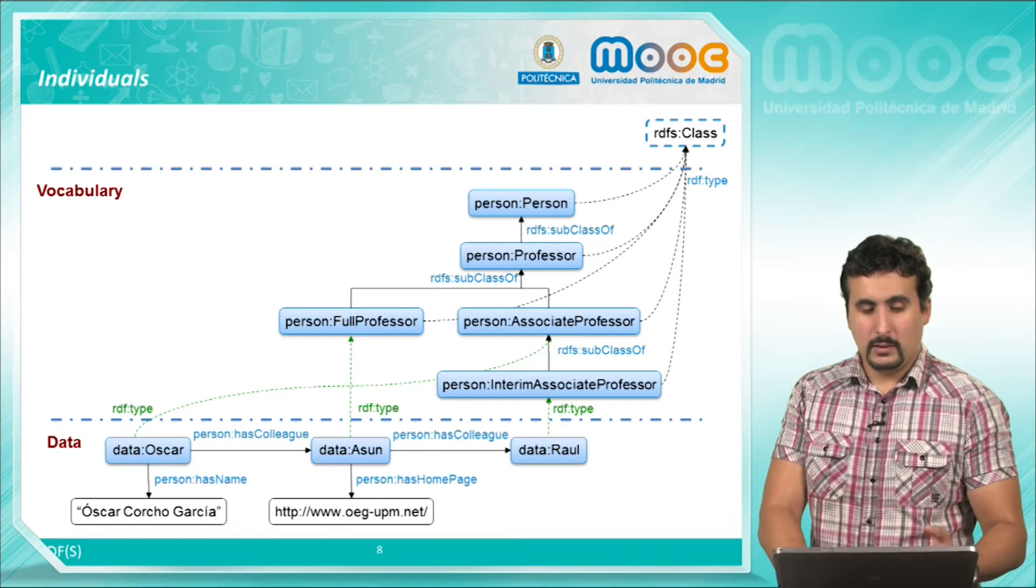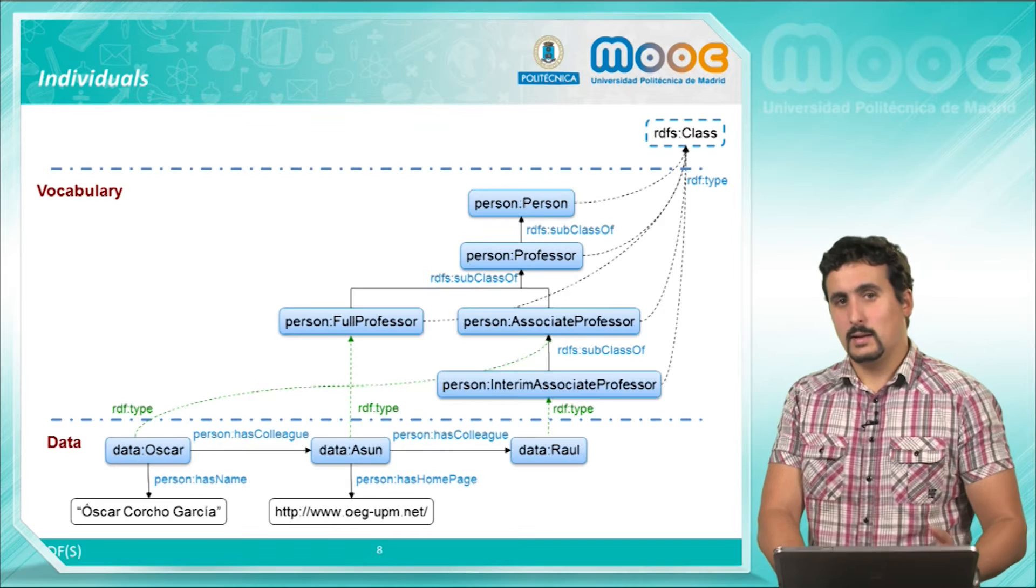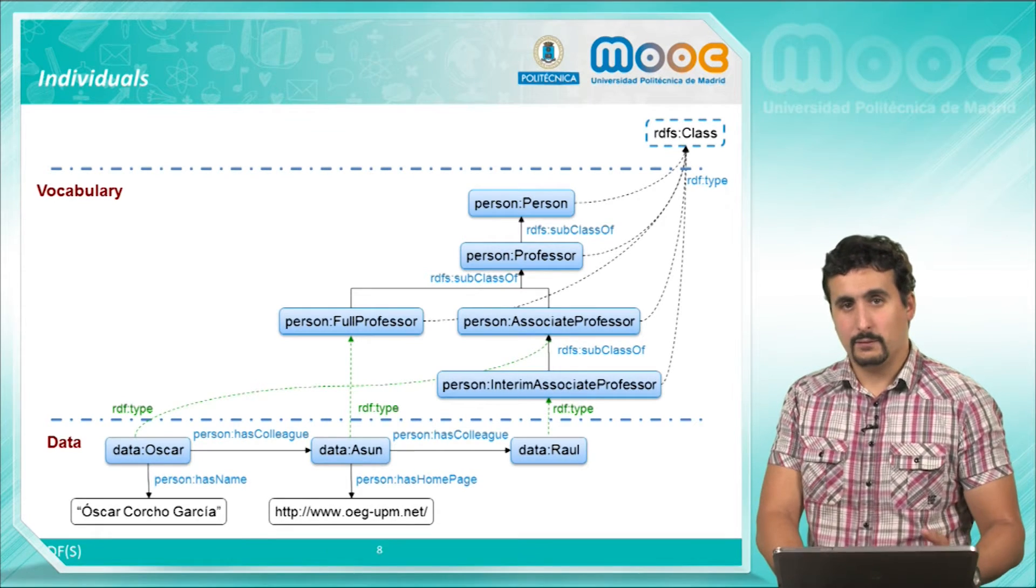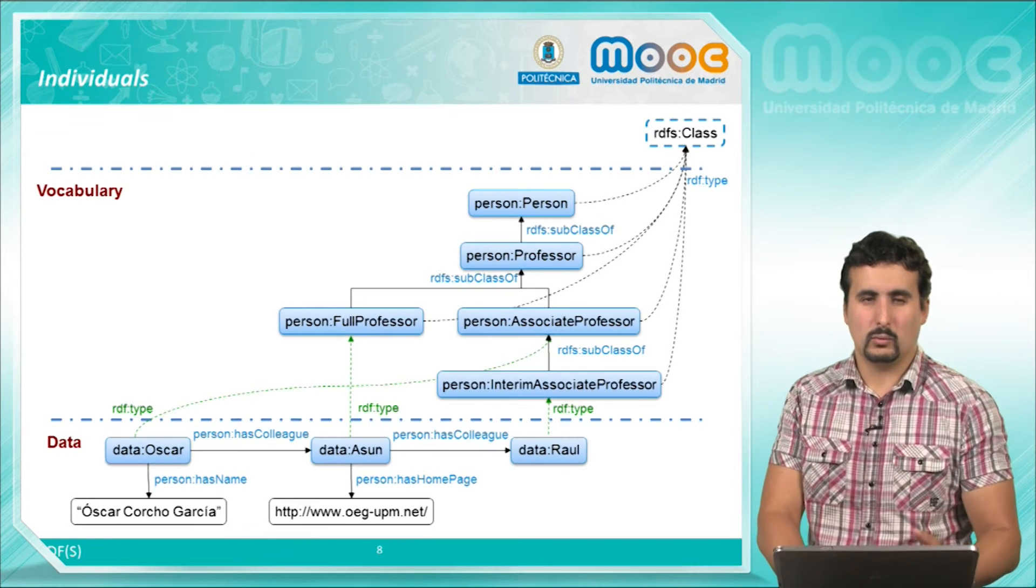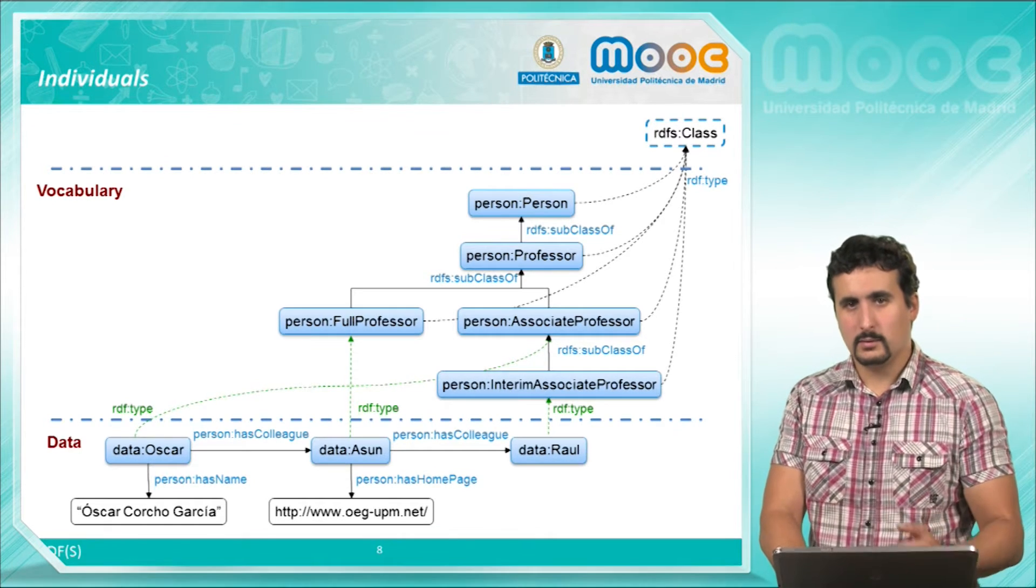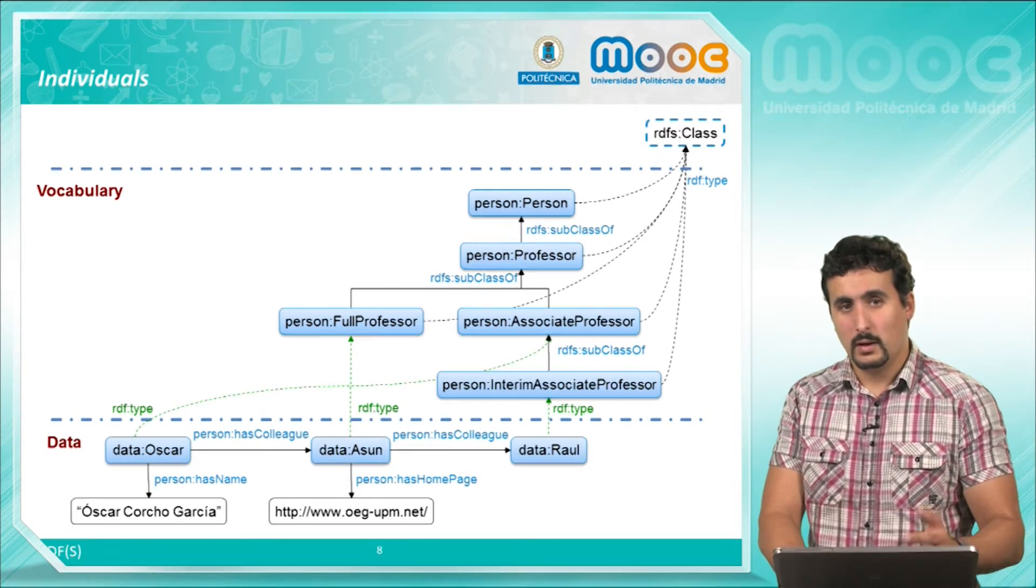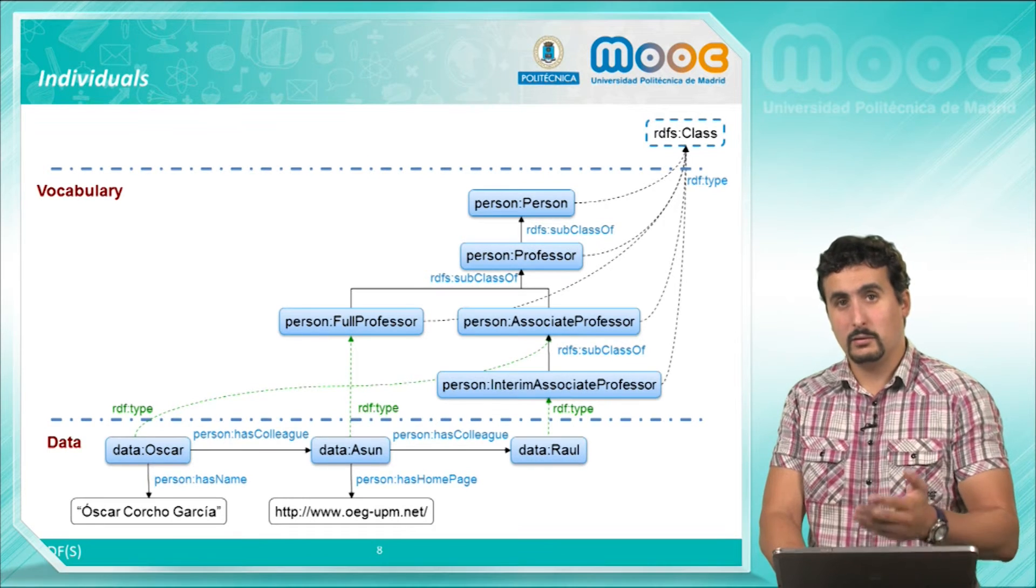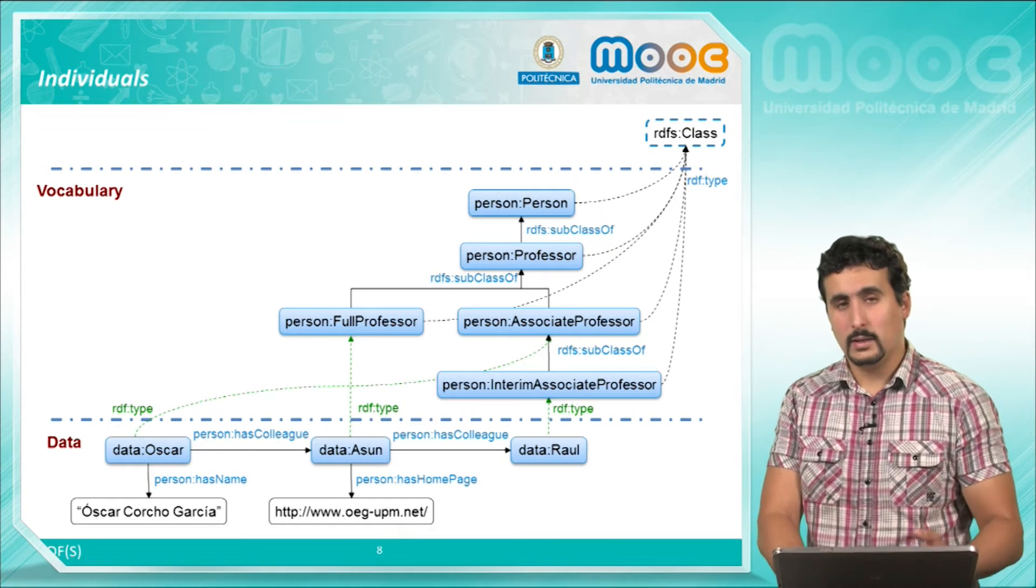We can also define individuals belonging to these classes, that is our data, defined according to our model. Here we see how Oscar is an instance of an associate professor, Raul is an instance of an interim associate professor, and Asun is a full professor.